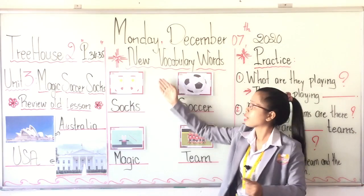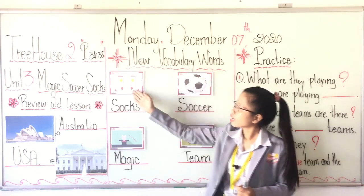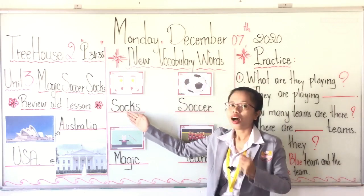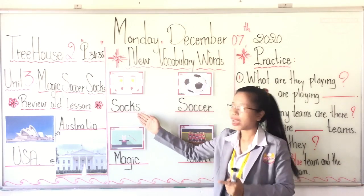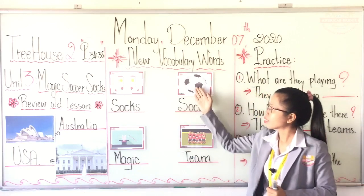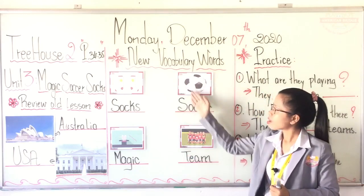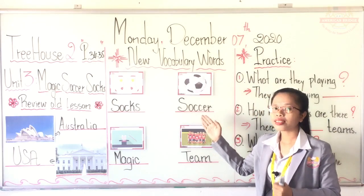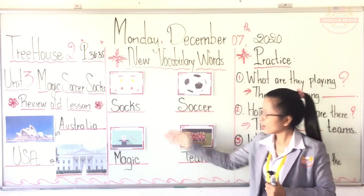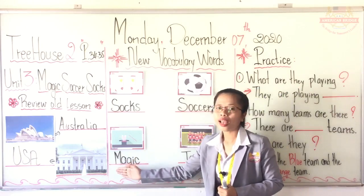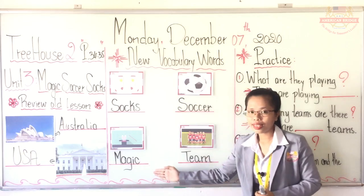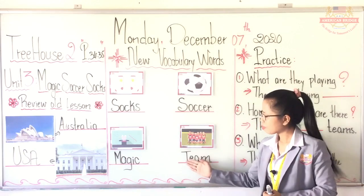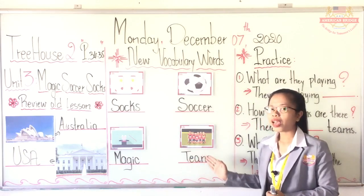And our new vocabulary words. Number one is socks — spell S-O-C-K-S. Second one is soccer. The next is magic — spell M-A-G-I-C. And our last word, this one we call team — spell T-E-A-M.